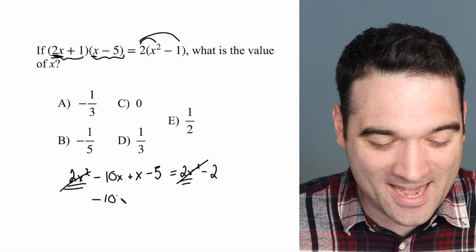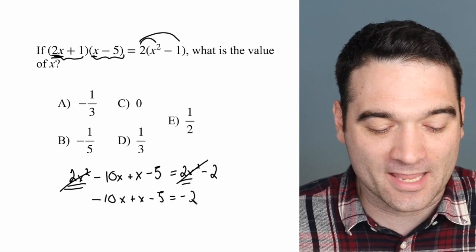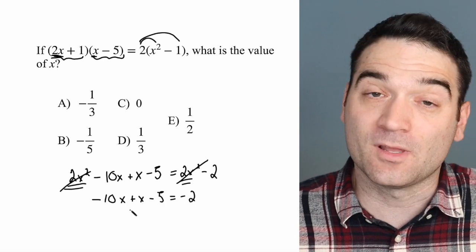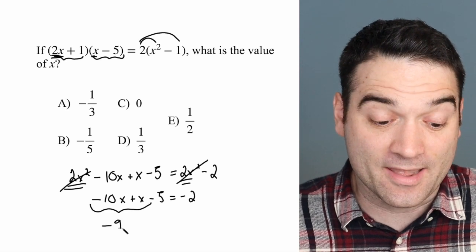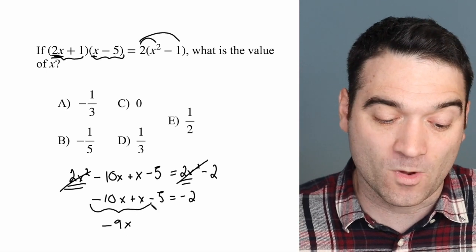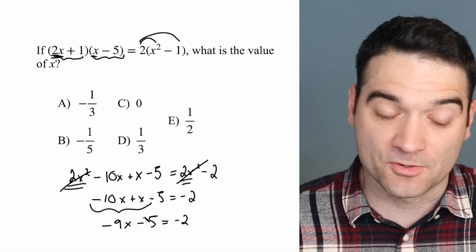So I have negative 10x plus x minus 5 equals negative 2. And so let me combine like terms together. That gives me negative 9x. Negative 10x plus 1x minus 5 is equal to negative 2. Almost there.